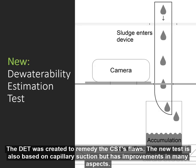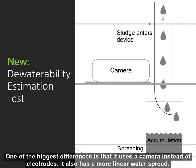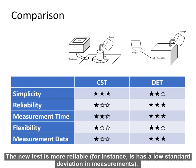The DET was created to remedy the CST's flaws. The new test is also based on capillary suction but has improvements for many aspects. One of the biggest differences is that it uses a camera instead of electrodes. It also has a more linear water spread. Here's a comparison of the two tests. The DET is fairly easy to use, similar to the CST, but it requires a laptop on top. The new test is more reliable — for instance, it has low standard deviation in measurements.